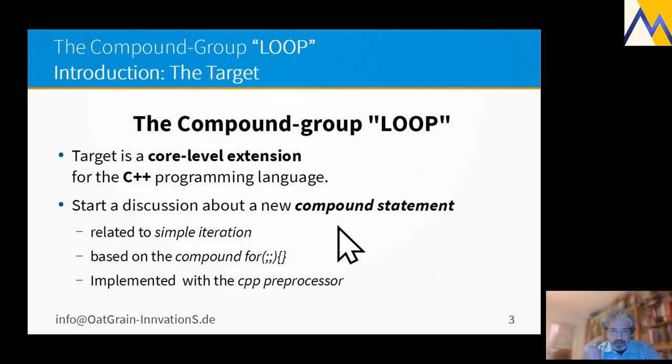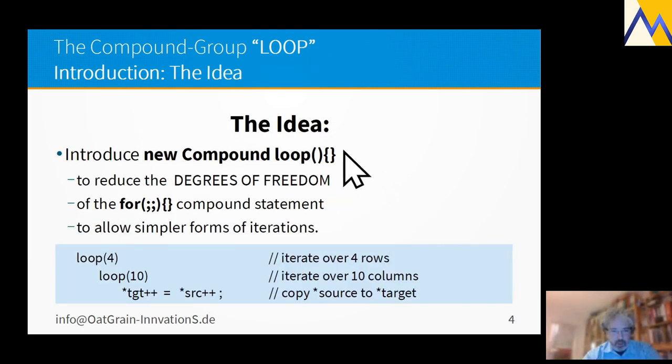The idea is to reduce the degree of freedom of a for compound statement to allow simpler forms of iterations. For example, if you have the task to iterate over a matrix field and you want to iterate over 4 rows over 10 columns and then do a block statement or a simple statement, you can use this construct.